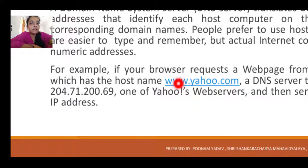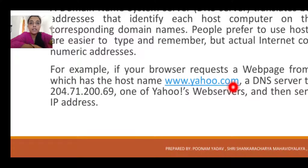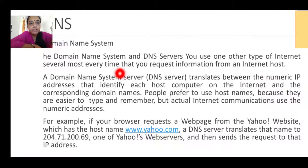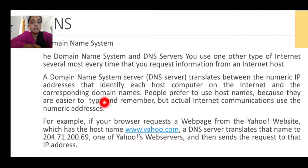What we remember is called the host name and domain name. The first part is the protocol, then www, then the host name like Google, and then the domain extension such as .com, .gov, .in, .edu, or .org. The DNS server translates between the numeric IP addresses that identify each host computer on the internet and the corresponding domain names. People prefer to use host names because they are easy to type and remember, but the actual internet communication uses the numeric addresses.